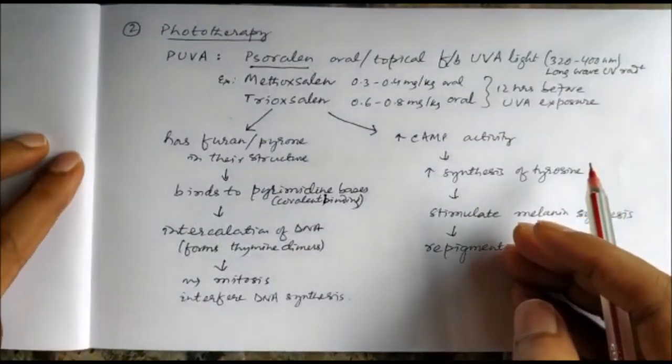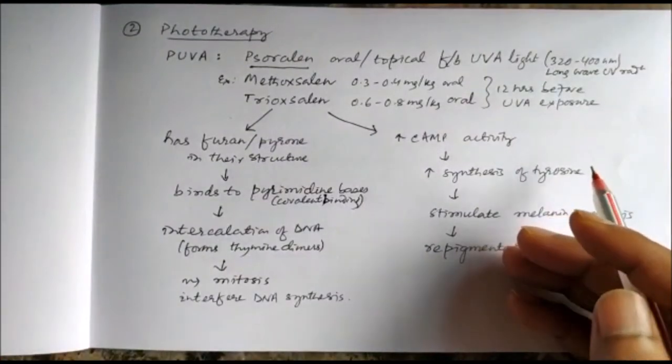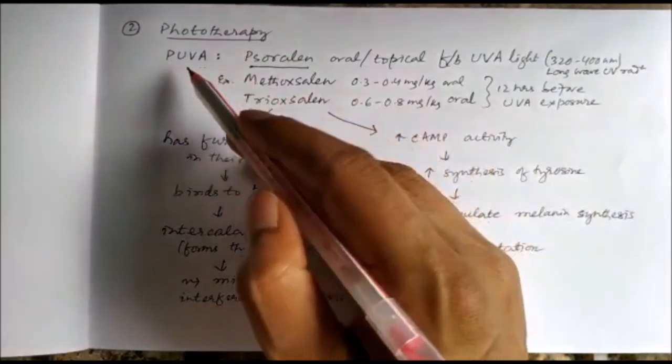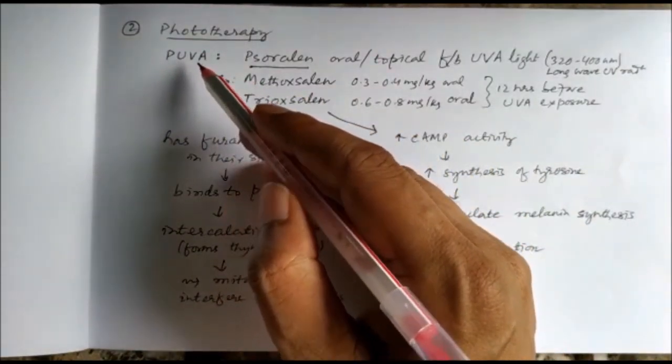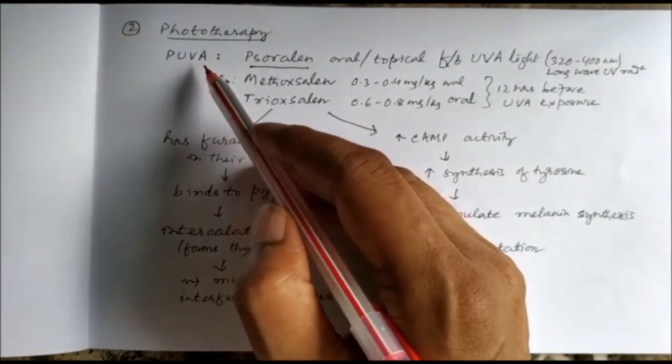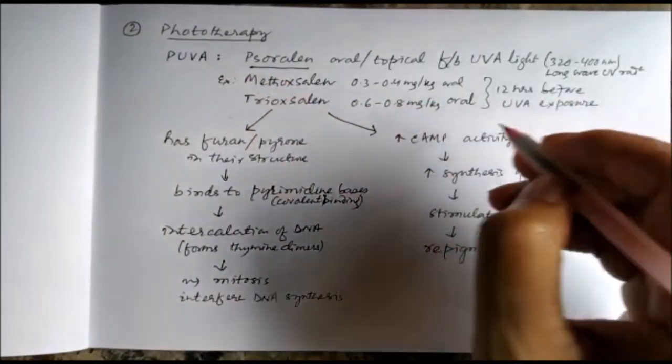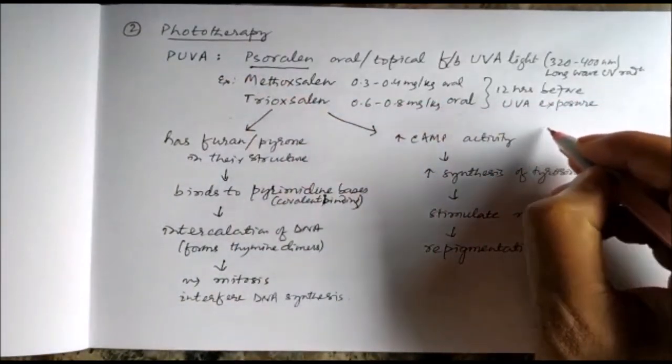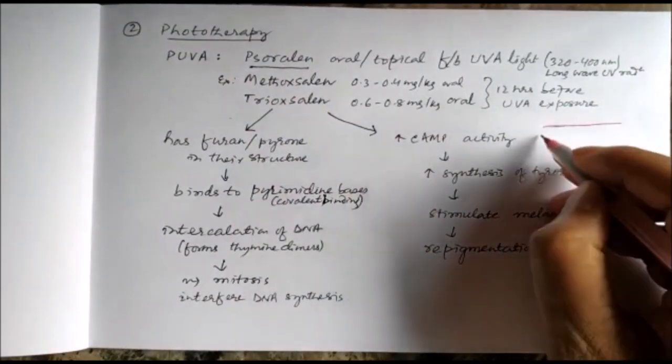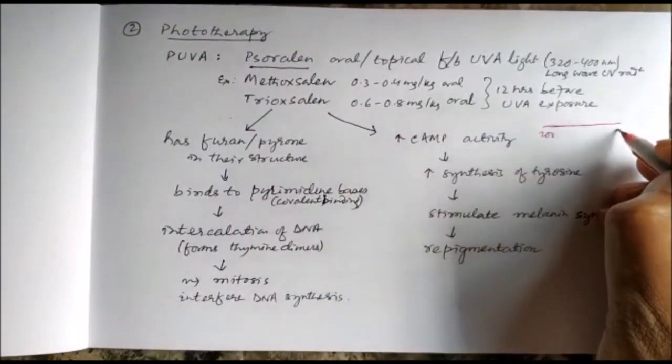The second treatment is phototherapy. We can use PUVA—that is psoralen plus UVA. As we have discussed before, the UV range is 200 to 400 nanometers.